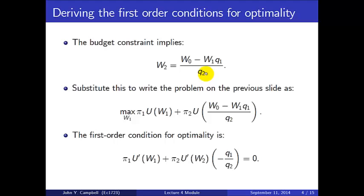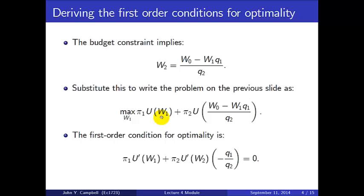Substituting the rearranged budget constraint into the objective function, we can write the problem as maximizing π1·u(W1) + π2·u(W2), where W2 has been substituted out. The problem now has a single choice variable, W1, with no explicit constraint. W0, q1, and q2 are all fixed numbers, and the problem is to maximize by choosing W1.